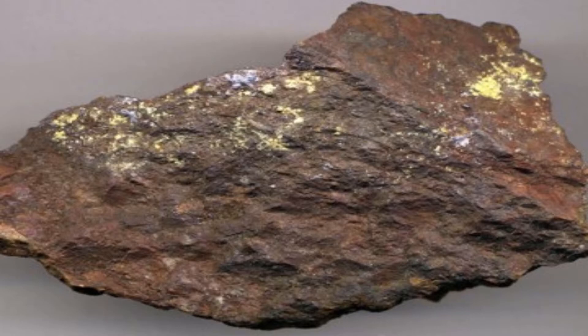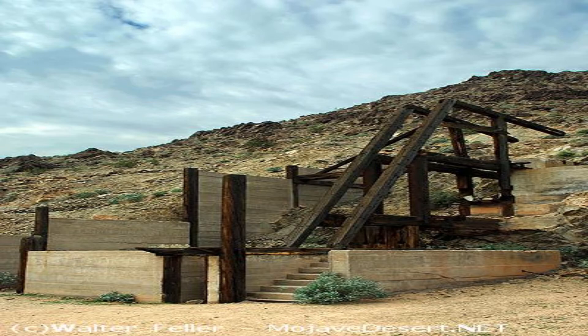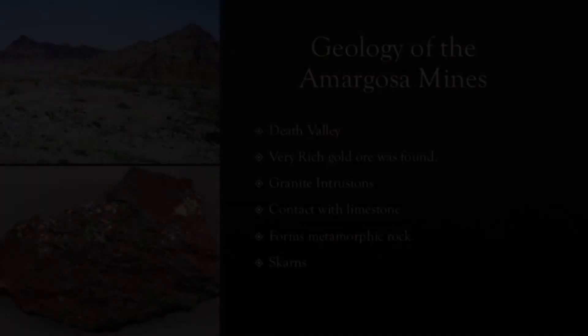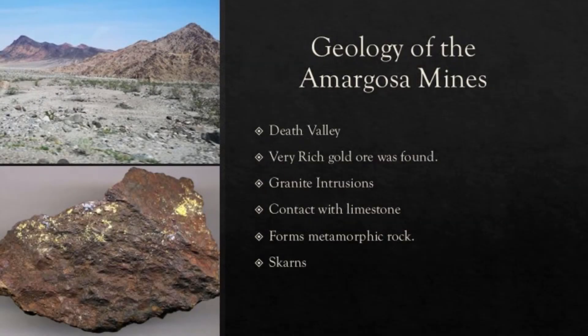These metamorphic rocks include hornfels and gold bearing skarns. The interesting part is that gold can still be found there today. You can go and prospect it yourself because this particular area is on BLM land, which means Bureau of Land Management. Just be sure you are not on someone's filed claim and avoid prospecting within Death Valley National Park.